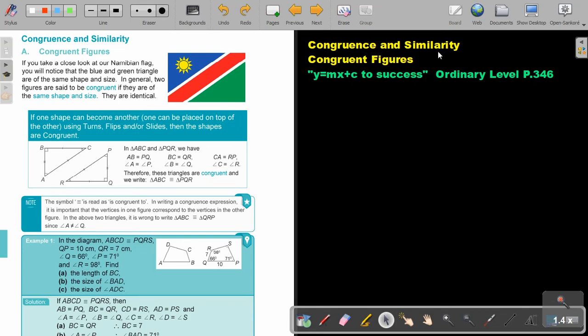Congruence and similarity. We are going to focus in this video on congruent figures. You will find this on page 346 in the Namibia Ordinary Level Mathematics textbook, Y equals MX plus C to success.